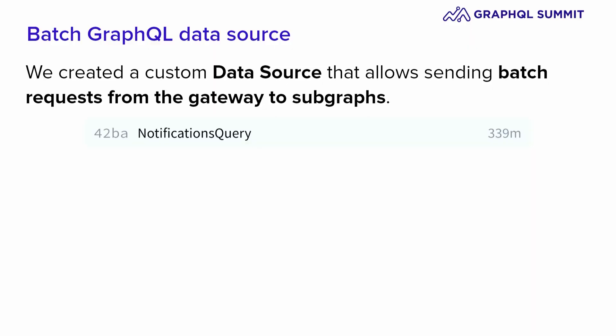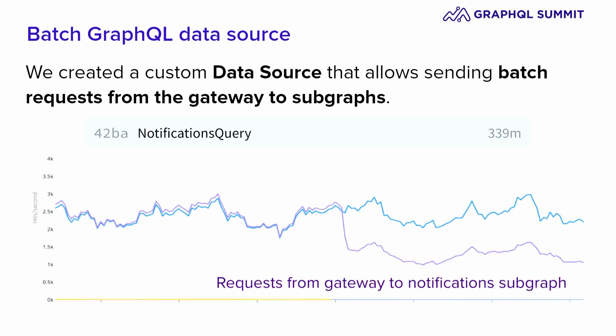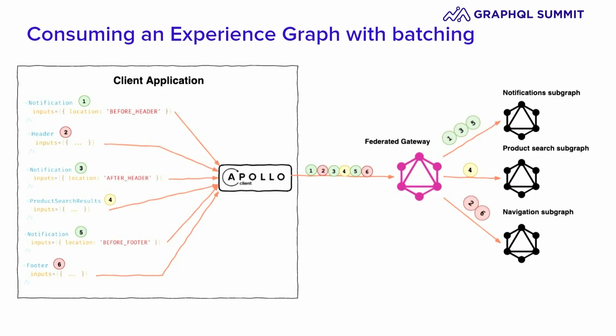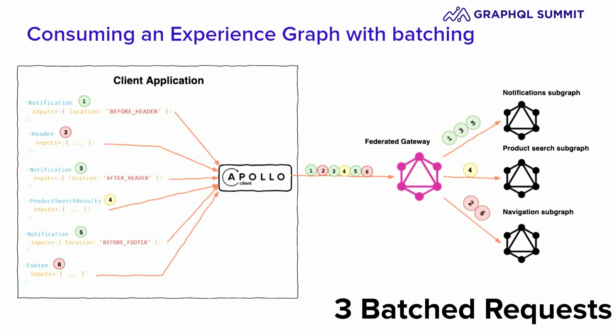We created a custom data source that allows sending batch requests from the gateway to subgraphs. This is an example of one of the most-used operations at Xperia Group — it's called the Notifications Query. Per day, we have more than 300 million requests. These are the results before and after turning on this new feature. Now the Apollo client grabs the request, the gateway receives one batch operation, and then sends three batched requests to subgraphs.